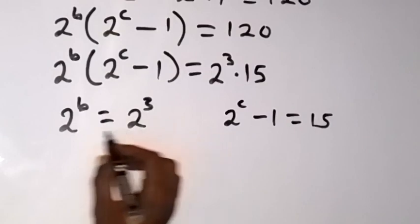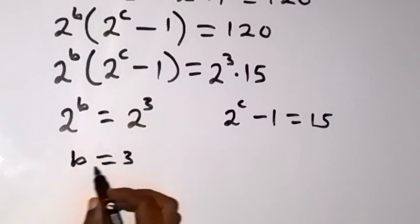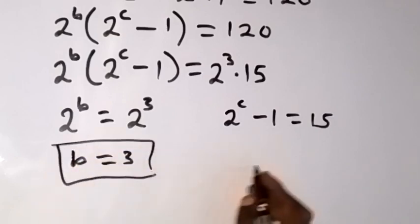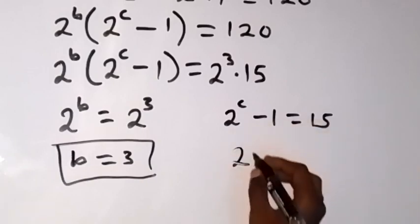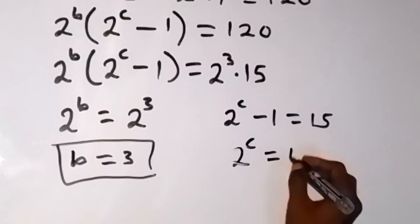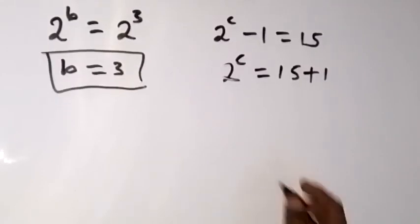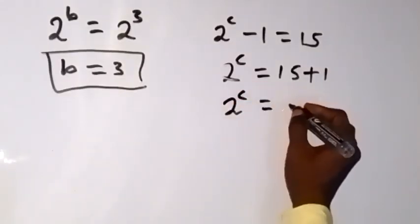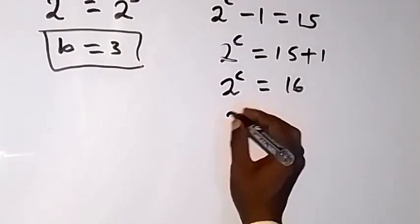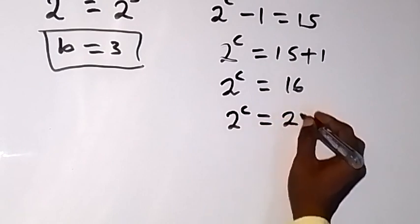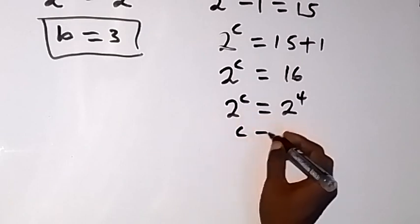From the first equation, b equals 3. For c, we take minus 1 to the other side so 2 raised to power c equals 15 plus 1, which gives us 2 raised to power c equals 16. Since 16 is 2 raised to power 4, we get c equals 4.